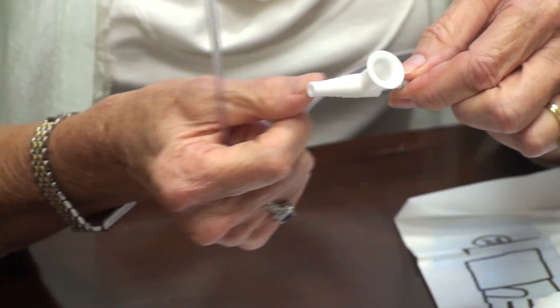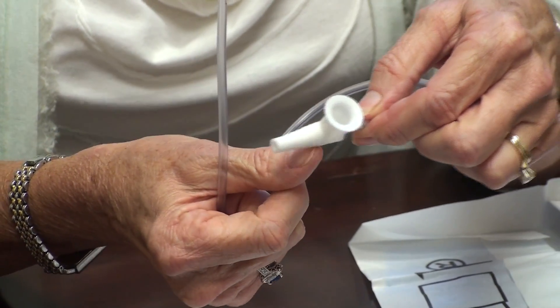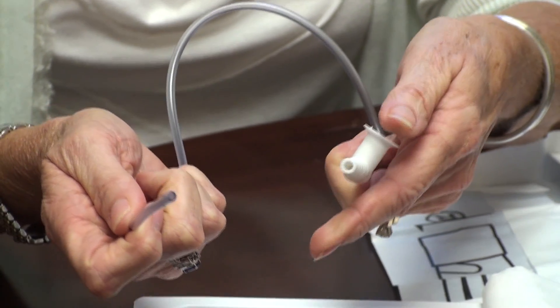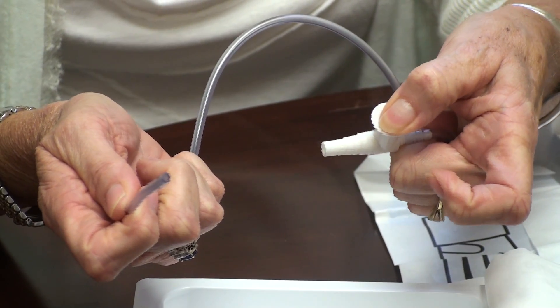All right, the end of the catheter down here will remain sterile. This part up here, the connector, fits into the suction catheter from the wall mount. And when you actually apply suction, you're going to put your thumb over the chimney spout there.